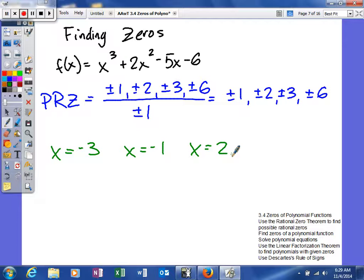As you can see, all those zeros were actually in the possible rational zeros that we found. Negative 1 would be from here, and then positive 2, and then negative 3. So there you go, example number 1.